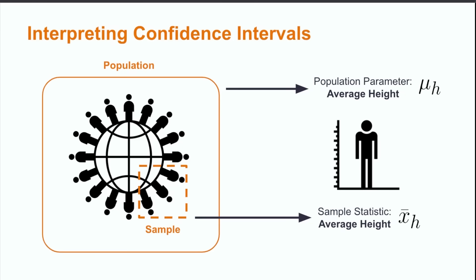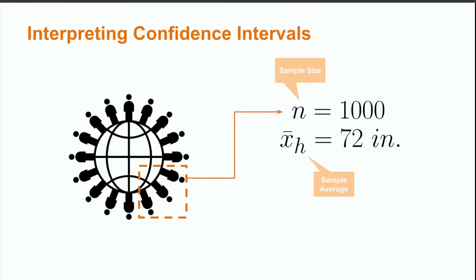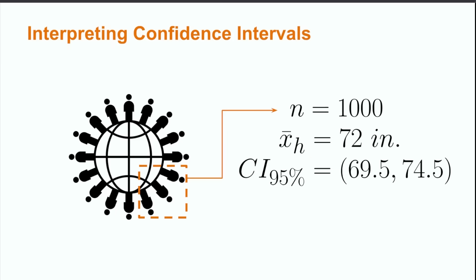Recall our earlier example about the average height of the earth's population. Let us imagine that our statistician has taken some time and has measured a sample statistic from 1,000 people and found that this sample has an average height of 72 inches. From here, he has also constructed a 95% confidence interval, which ranges from 69.5 to 74.5 inches. Notice how this interval is centered at 72 and goes 2.5 inches greater than and less than 72. What can we then say about mu h in this situation? Pause the video for a moment to think about this. Can we say that it is equal to 72 inches with some certainty or only something about where it lies within the confidence interval?